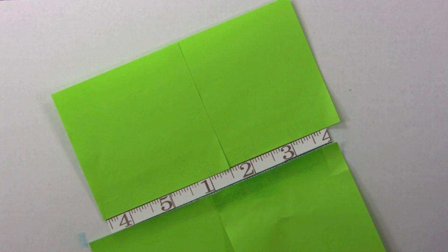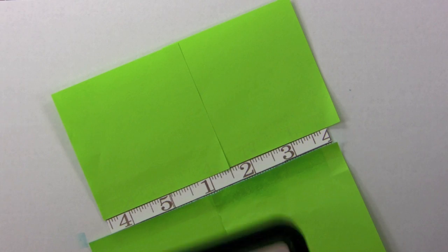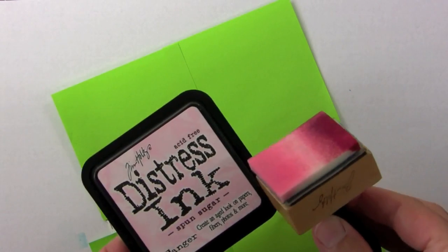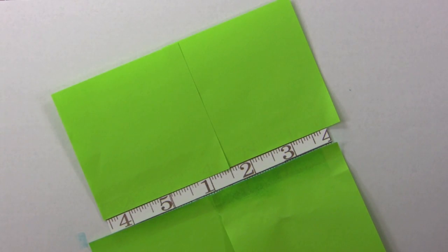Then we're going to go ahead and repeat the same technique for the other two rulers. Here for the sake of time I went ahead and masked off the middle ruler. And we're going to make it this pretty pink color. It's called sponge sugar.